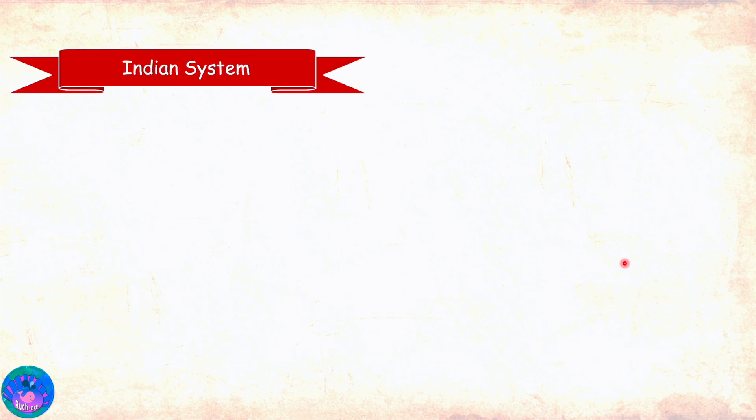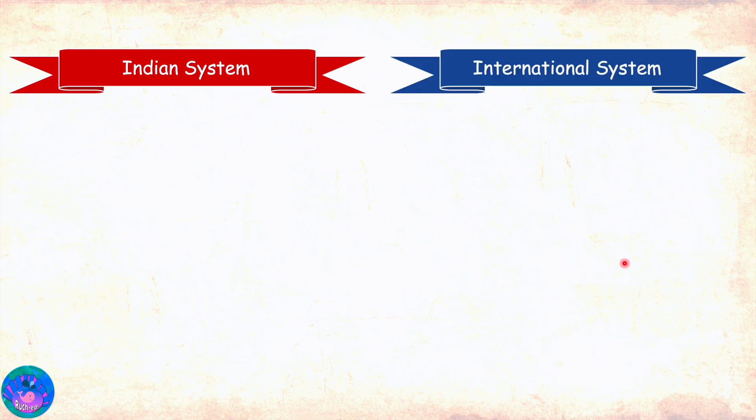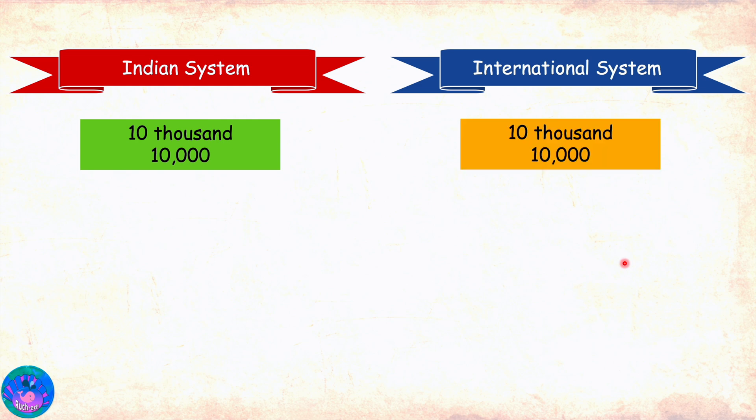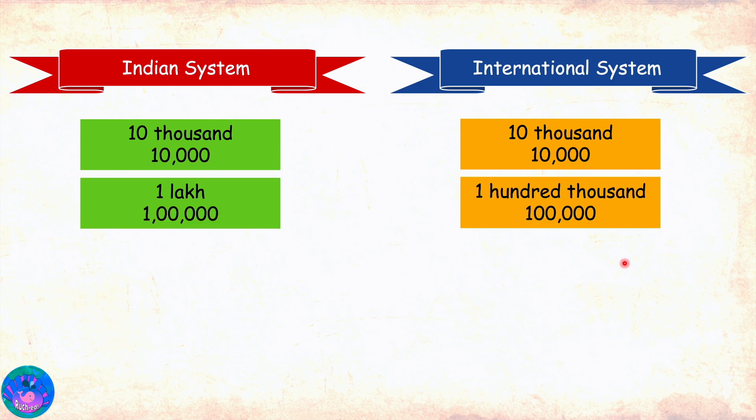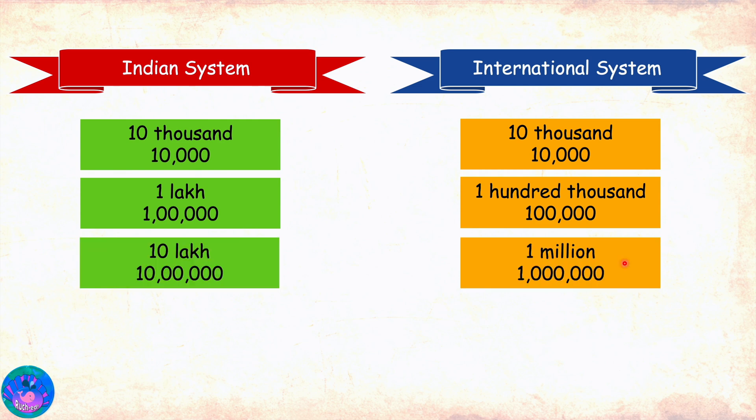Let's take some numbers in the Indian system and see how they read in the international system. Ten thousand in Indian system is also ten thousand in international system. Remember, numbers up to five digits are read the same in both systems. One lakh is read as one hundred thousand in the international system. Ten lakh is one million.